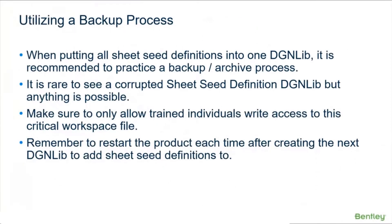As you're doing this, we're going to be talking about putting multiple sheets into one DGN lib. And if you listen to some of my old videos I did several years ago, I said, well, if you mess up, you've got to delete the DGN lib and start over. What if I put 50 into this — now I've got to start over? Well, we want to make a backup process. In the very early days of ORD, there were ways that you could corrupt this DGN lib.